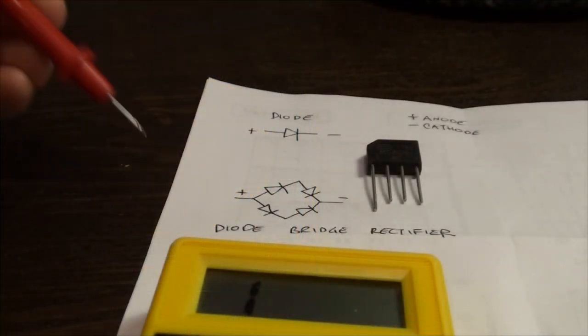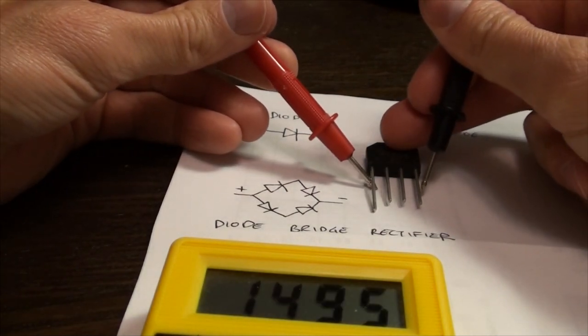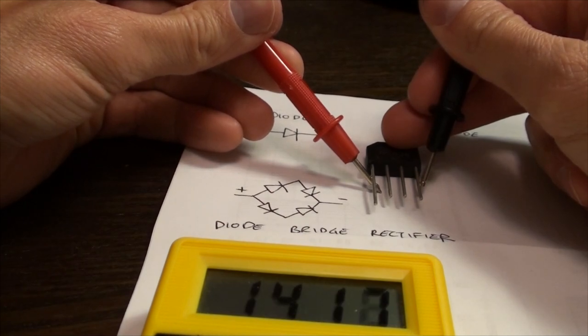To test this theory, take your red probe, place it on the positive end, your black probe on the negative end, and that should give you a reading.